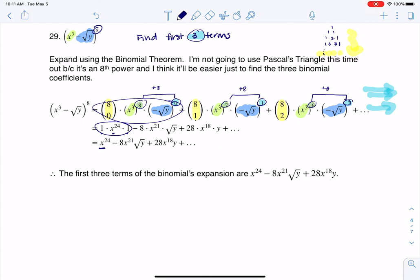Then I find out that 8 choose 1 is 8. This becomes x cubed to the 7th, which is x to the 21st. Negative square root of y to the 1 is square root of y, but notice I have that negative symbol there. When I simplify that, there's my second term. Then I do it for the third term, and that's the answer we're looking for.